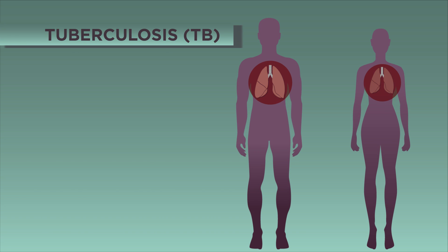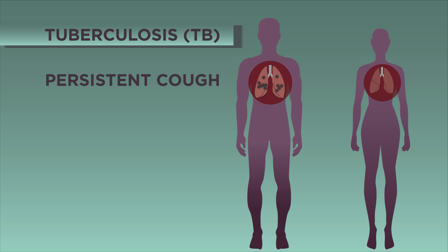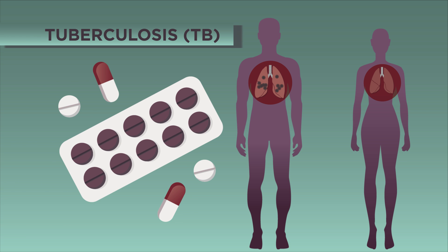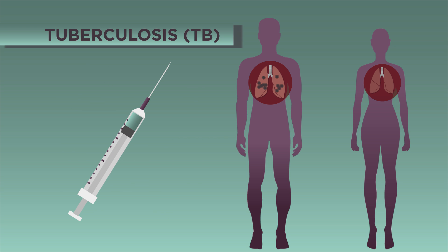Tuberculosis, or TB for short, is a bacterial infection that mainly affects the lungs. It is spread by breathing in tiny droplets from coughs or sneezes of an infected person or animal. Symptoms of TB include a persistent cough which may bring up blood, fever, tiredness and swellings in the neck. TB is a serious condition, but it can be cured if it is treated with the right antibiotics. The number of cases of TB in many countries has been reduced by the use of vaccination.